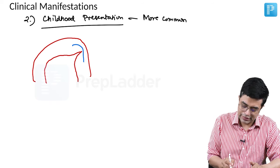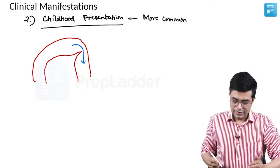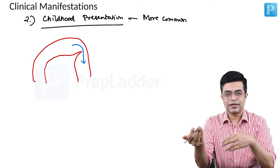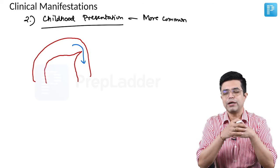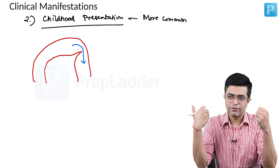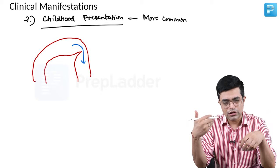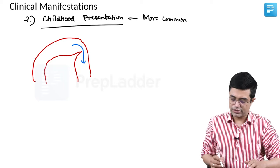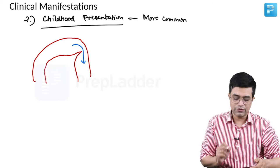Because of the narrowing, the child is unable to increase his cardiac output, increase his flow. It is a fixed cardiac output which is now happening. Whenever there will be periods of exertion, whenever the child walks or runs, there will be pain in the lower limbs because correspondingly the blood flow cannot be increased in the lower limbs. These children will have a more gradual onset presentation.